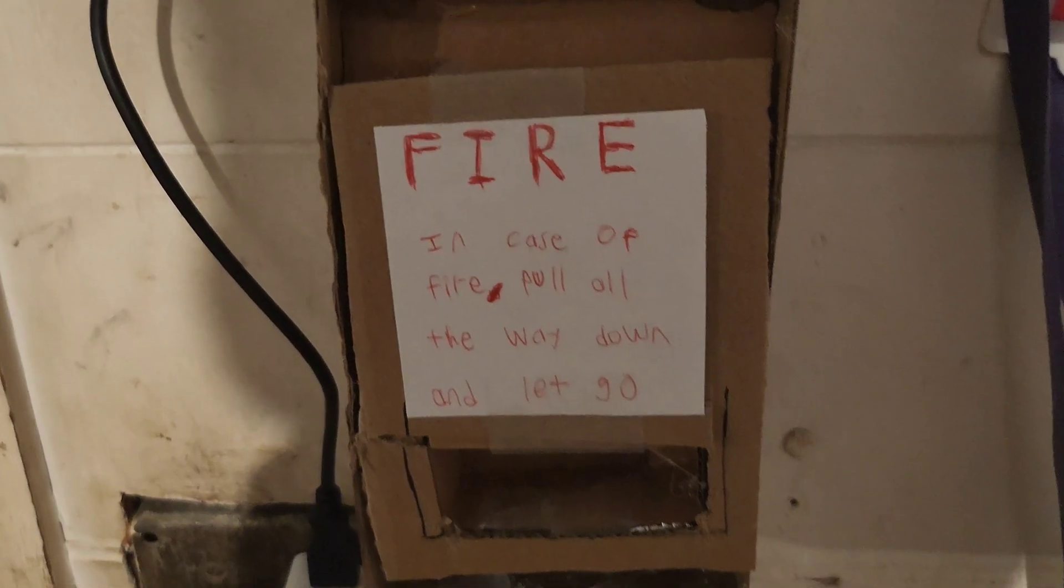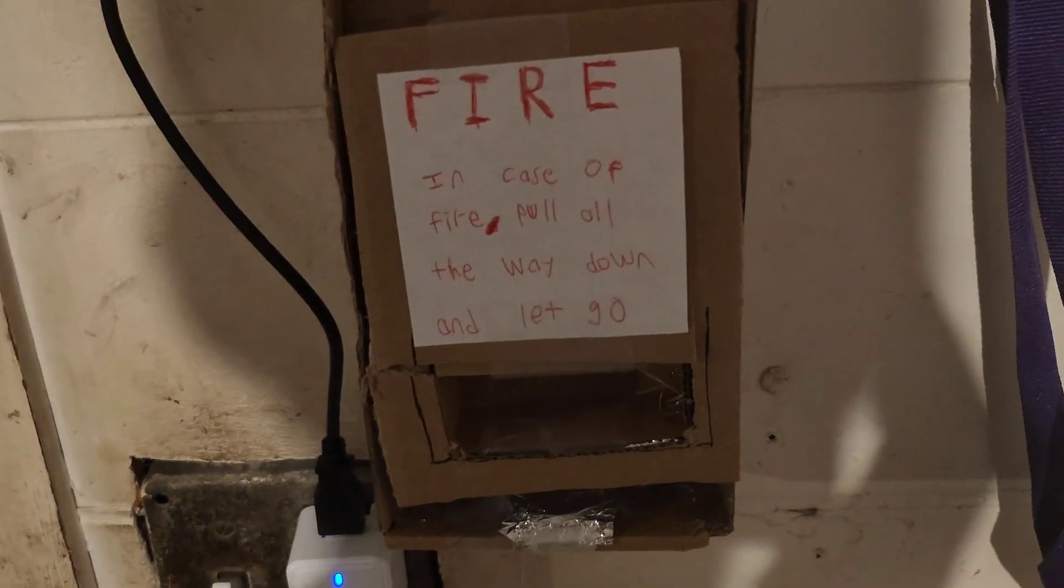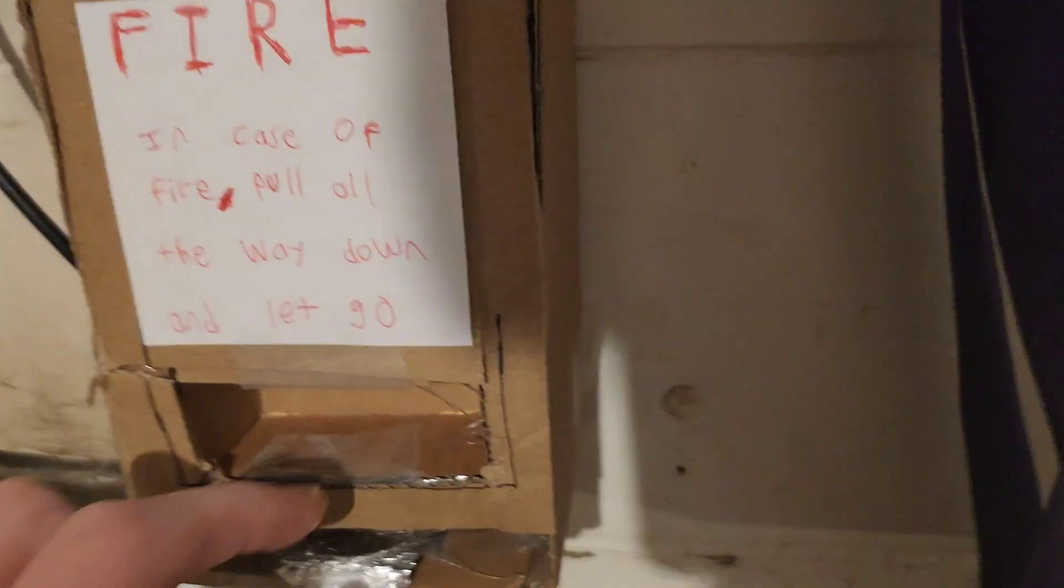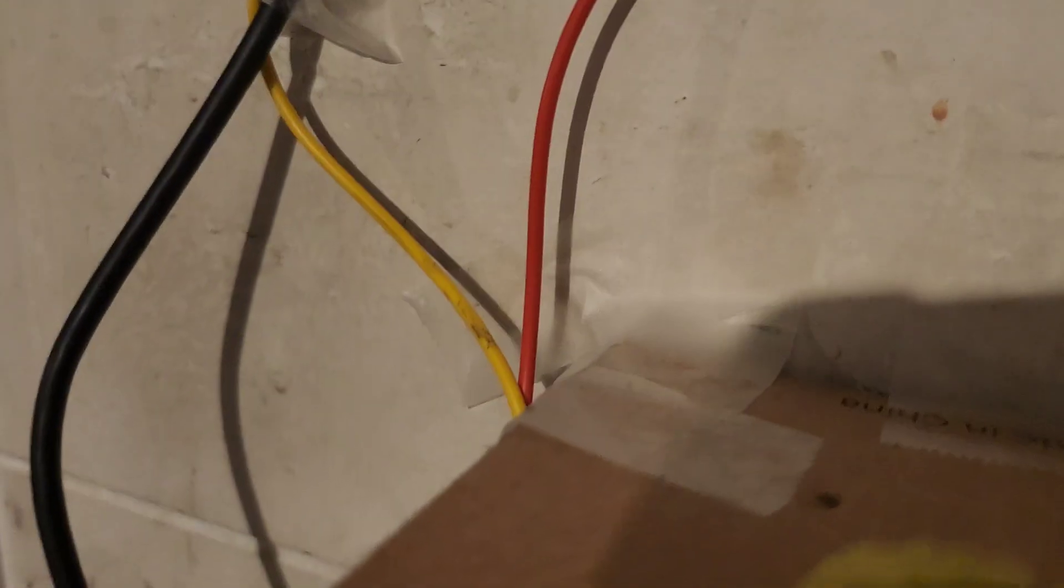Here we have a pull station in the garage. As you can see, it says fire. In case of fire, pull down all the way and let go. I'm going to show you how this works. You can just pull this out like this, and there's a spring in here which holds it up. And then there's two magnets, both have aluminum foil on them. And then when they touch, I'll get a connection. The electricity flows through, goes back to the micro:bit, making it go into alarm.